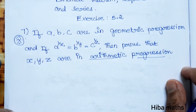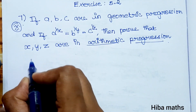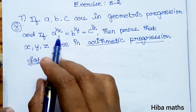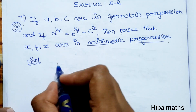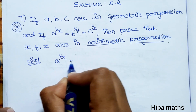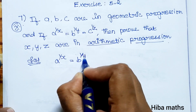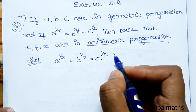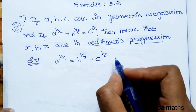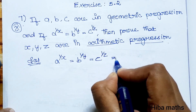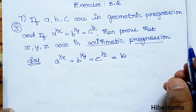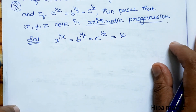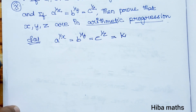Let's see how to solve this. In the solution, first the given condition: if a power 1/x is equal to b power 1/y is equal to c power 1/z, and in this condition a, b, c is a geometric progression.